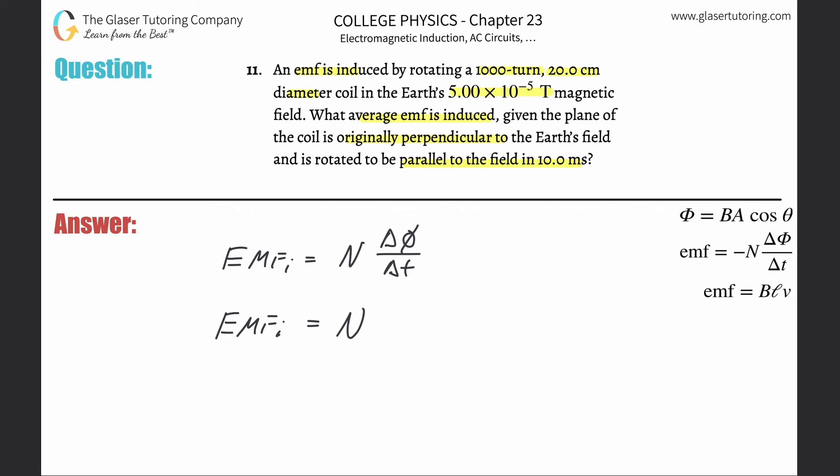Check out number one for that explanation. So what we now realize is that if I have a changing magnetic flux, that must mean one of these three variables is changing.